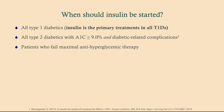All type two diabetics will get insulin if they have an A1c of 9.0 or higher and they have diabetic-related complications, or if they have failed maximal antihyperglycemic therapy — if we're not able to get them under control with medications, then we will go for insulin.